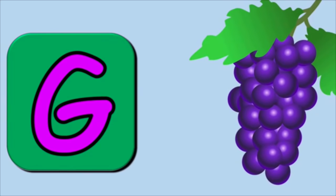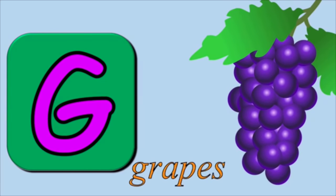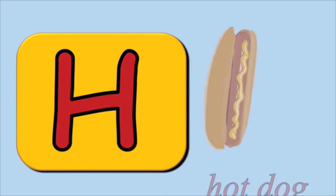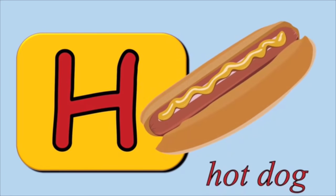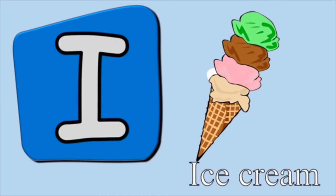G is for grapes. G, g, g. H is for hot dog. H, h, h. I is for ice cream. I, i, i.